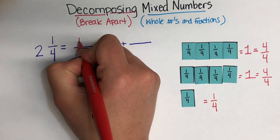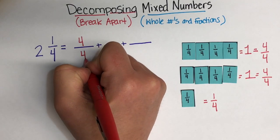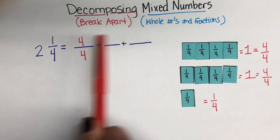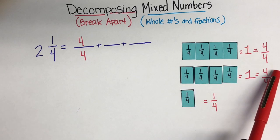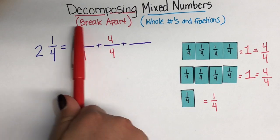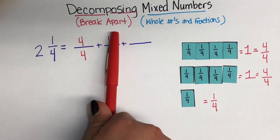Now, 4/4, again, that is the same as 1 whole. So, if we put that 4/4 there, we've covered 1 out of the 2 wholes. So, we're going to take the other whole and rewrite it as 4/4 over here. So, again,